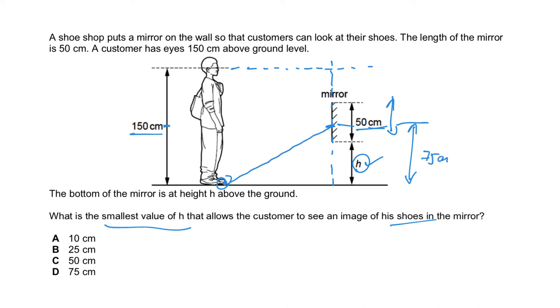Light shines on the shoe, the shoe reflects light, and then this ray hits the point of incidence and is reflected back into the eye.